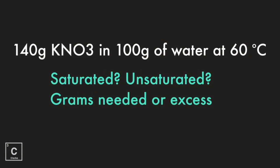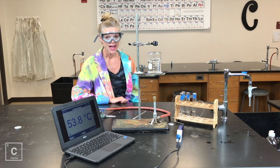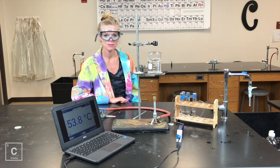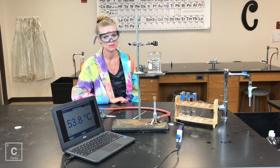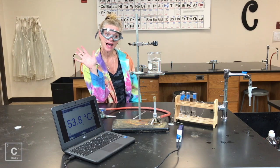Okay y'all, last one: 140 grams of potassium nitrate in 100 grams of water at 60 degrees Celsius — is this saturated or unsaturated? How many grams are needed? How many grams are in excess? Well guys, that's all I have. I hope you enjoyed the lab. I also hope you learned a little bit about solubility and how solubility curves are created. Until next time, bye y'all!